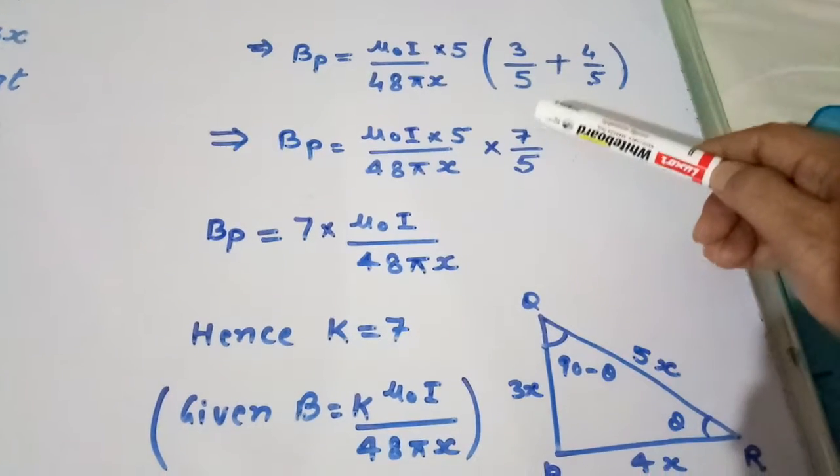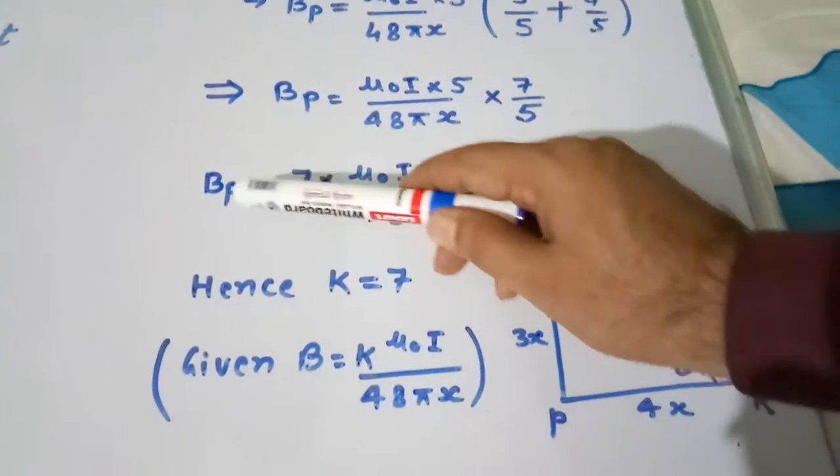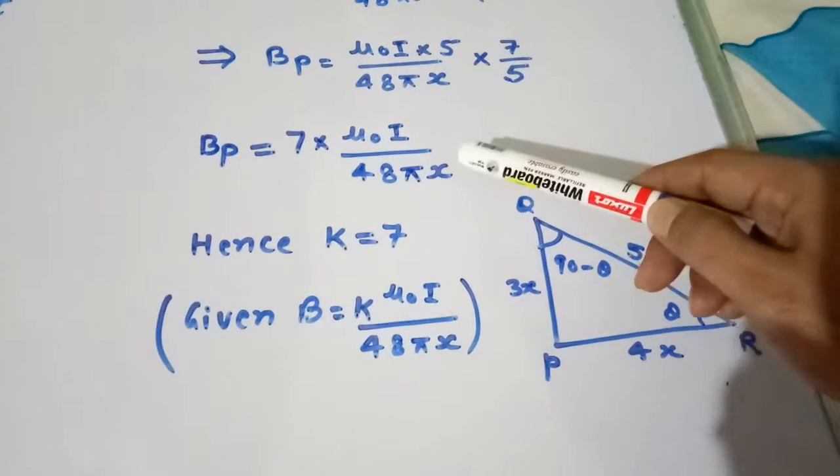5 will cancel out and we write 7 before. So BP equal to 7 times μ₀I divided by 48πX.